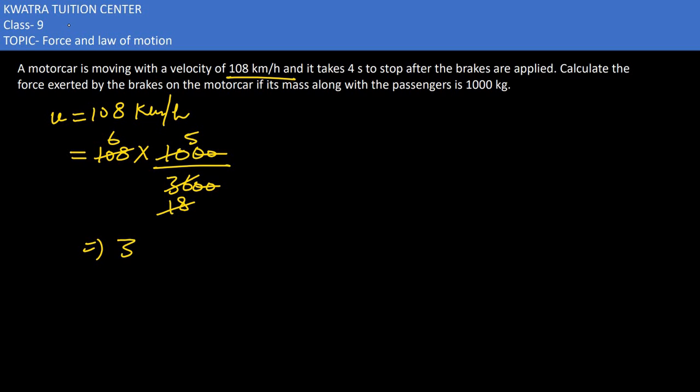30 meter per second. So u in this case is 30 meter per second, and the final velocity would be 0. Why is it 0? As the brakes are applied, it has been in state of stationary, it would be at rest.